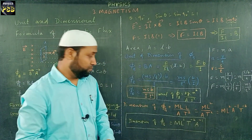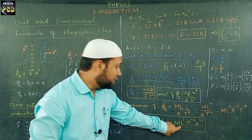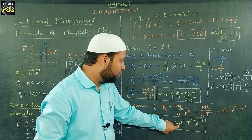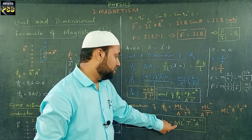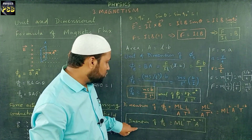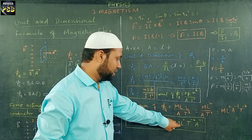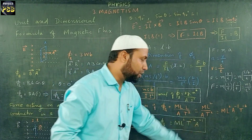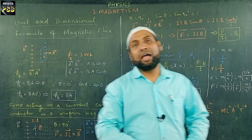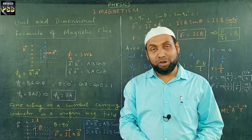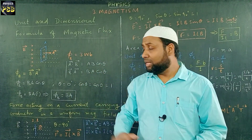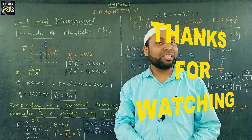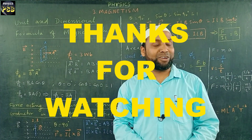When there is no power shown, that means the power is 1. So the dimension of Φ_B is M¹·L²·T⁻²·A⁻¹. I hope the video is useful. If you have any doubt related to the topic, please put it in the comment section. Thanks for watching.